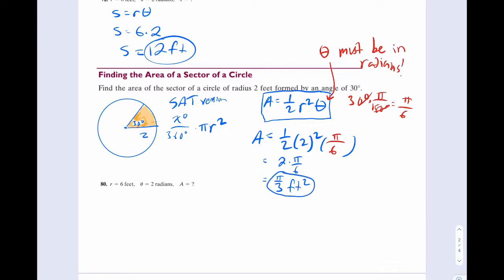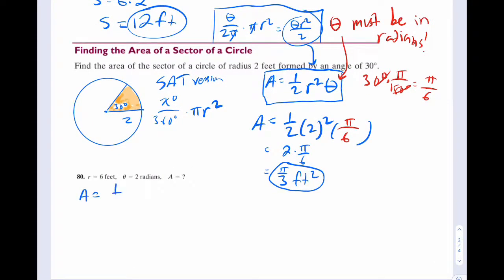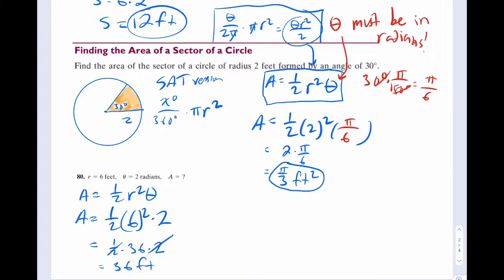To derive that formula, you do theta over 2π times πr² — the π's cancel and you get theta r squared over 2, which is the exact same thing. Last example: A equals 1 half r squared theta. A equals 1 half times 6 squared times 2 — that's 1 half times 36 times 2 — the answer is 36 feet squared.